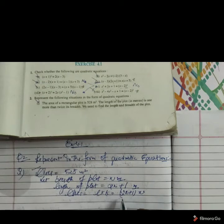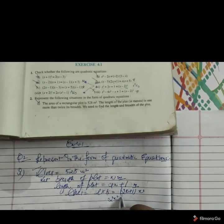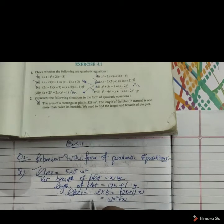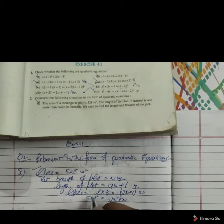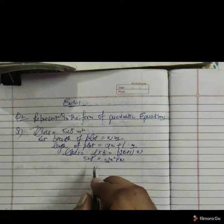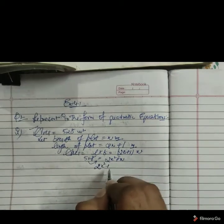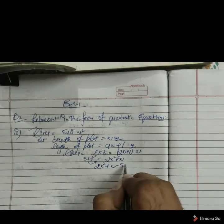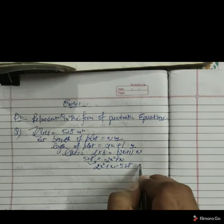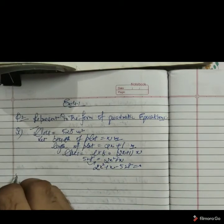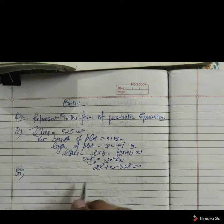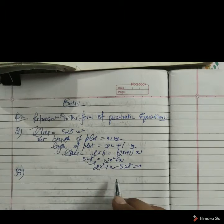If you open the bracket we get 2x square plus x is equal to area 528. Shifting 528 on the other side we get 2x square plus x minus 528 is equal to 0. This is a representation of first information in the form of quadratic equation.